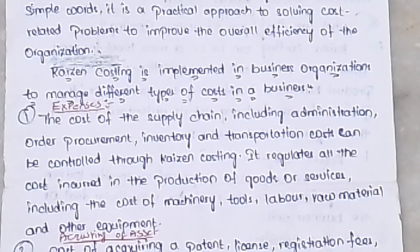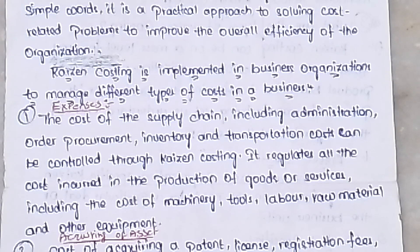The cost of inspection, machinery, tools, labor, maintenance, and equipment are all included under production costs that can be managed through Kaizen Costing.